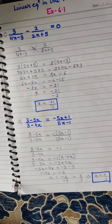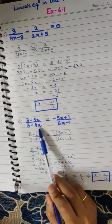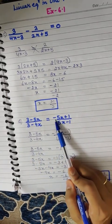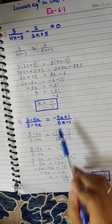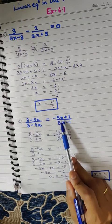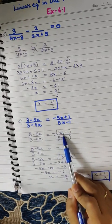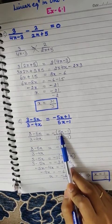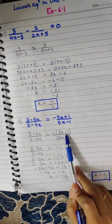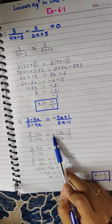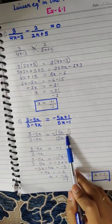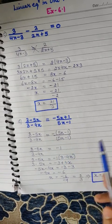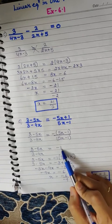Next question: 3 minus 5x divided by 3 minus 4x, equals minus 5x plus 1 divided by 5x minus 1. Take minus common from the numerator on the right hand side. If we take minus common from minus 5x plus 1, we get minus times bracket 5x minus 1, because minus times 5x gives minus 5x and minus times minus 1 gives plus 1. So the numerator 5x minus 1 and denominator 5x minus 1 cancel each other, giving minus 1.